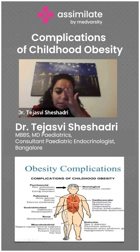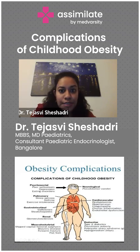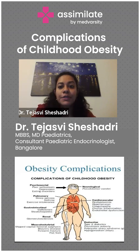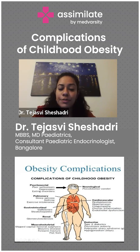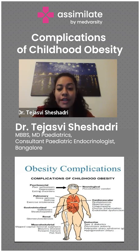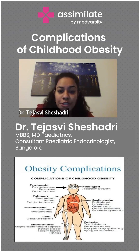The obesity complications can be numerous. Starting from the brain, they can have pseudotumor cerebri. They are known to have metabolic syndrome, dyslipidemia, hypertension, endothelial dysfunction. Type 2 diabetes is very common now in children and adolescents. Precocious puberty and PCOD resulting in irregular menstrual cycles.